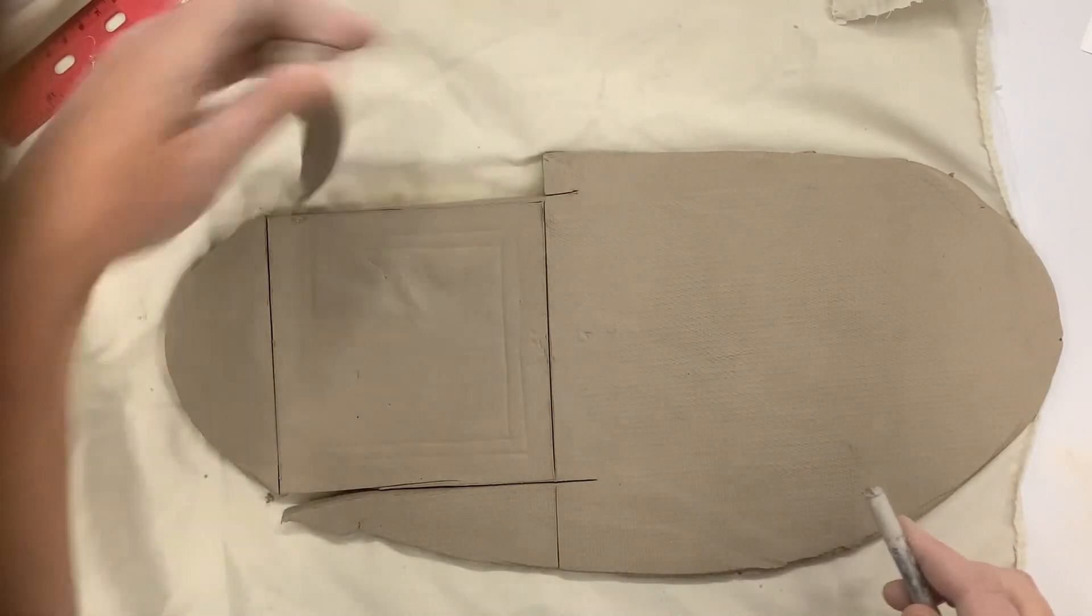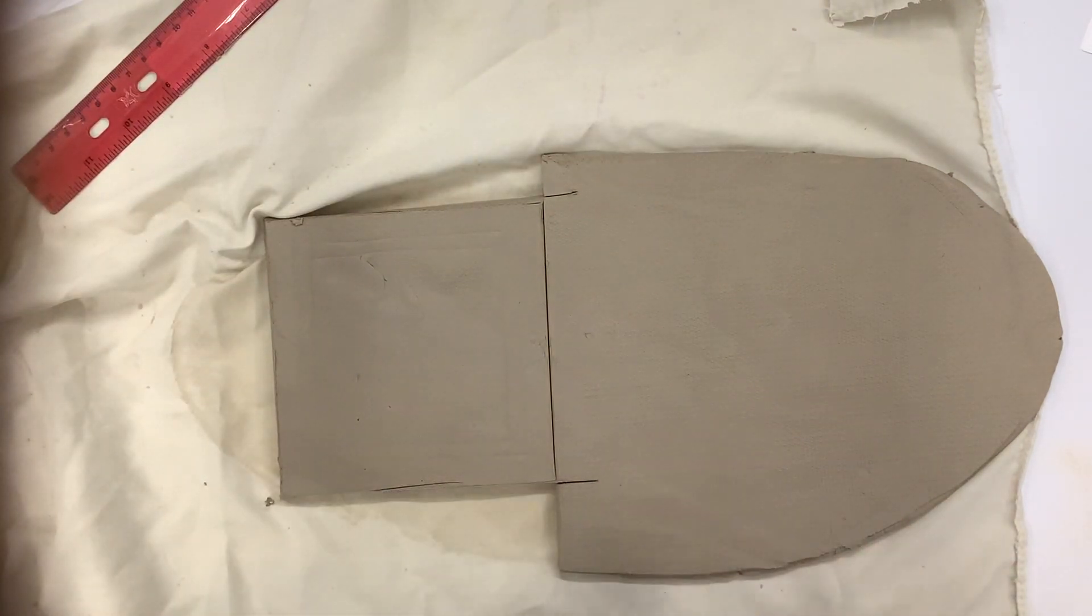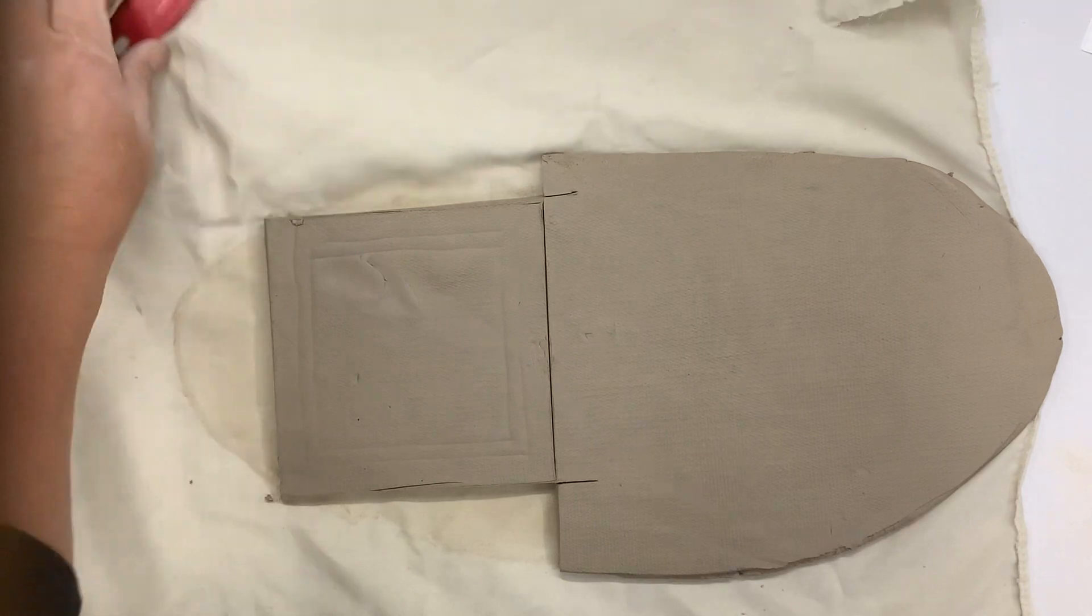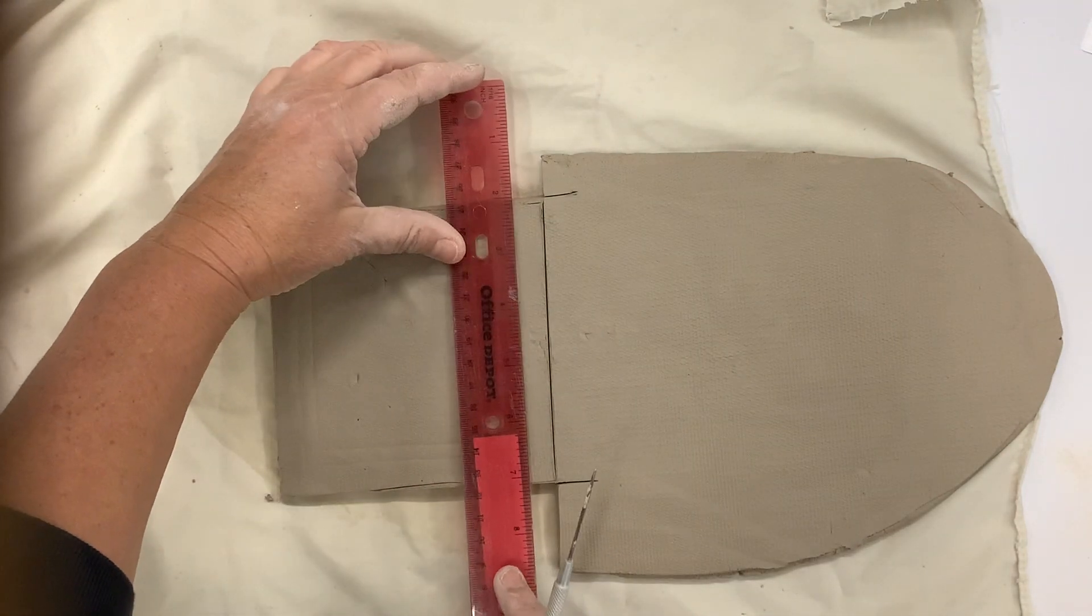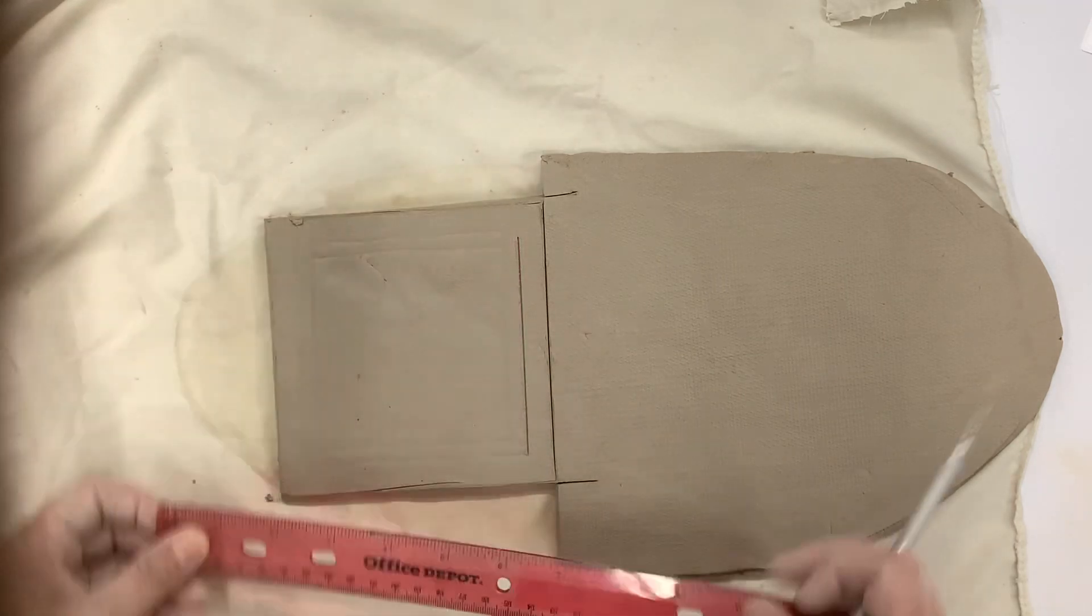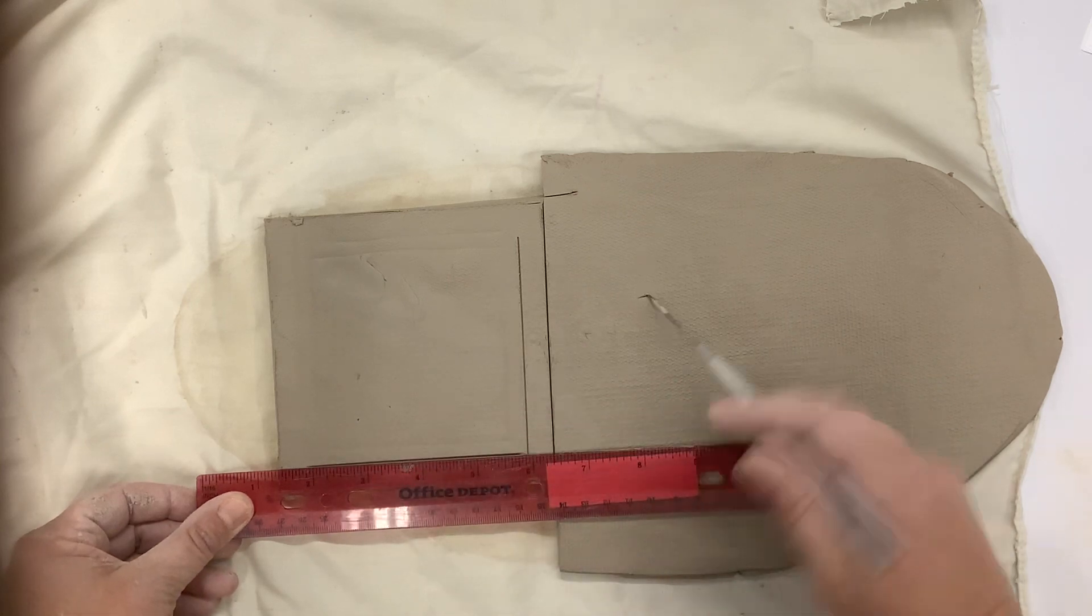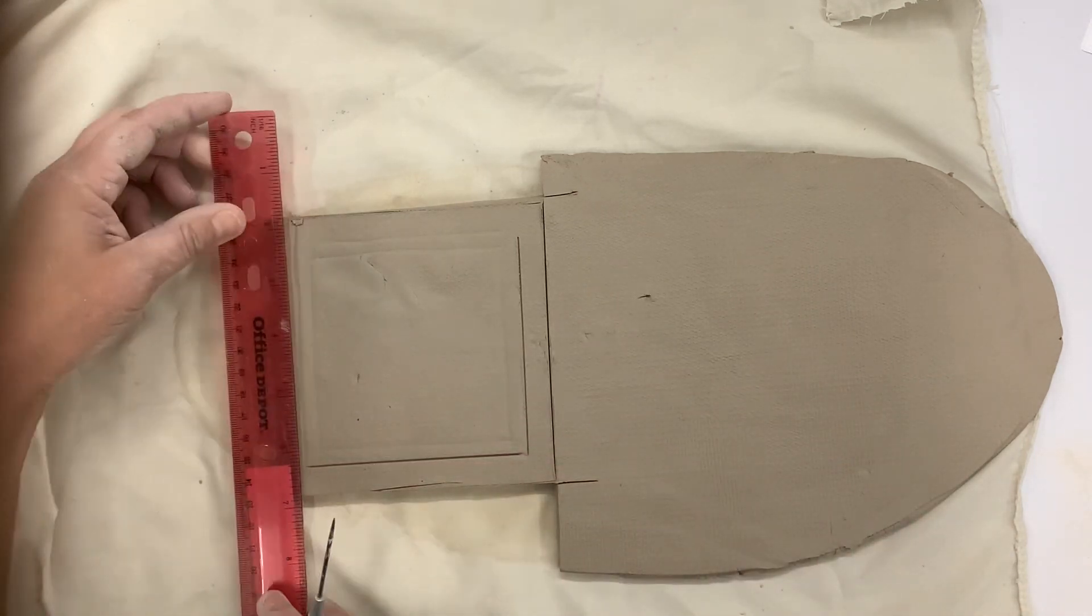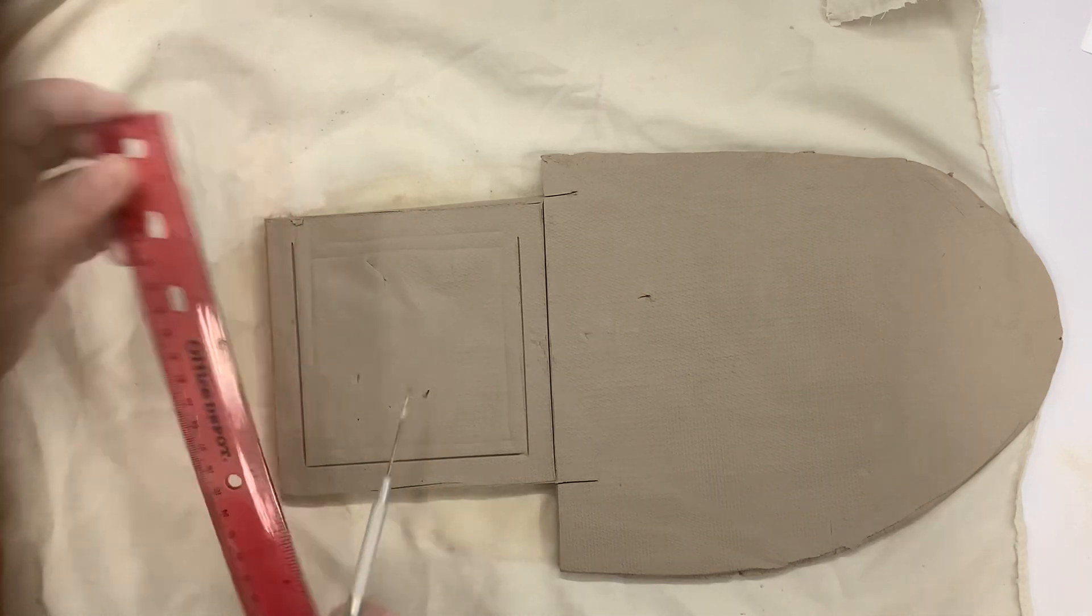Then you can go ahead and take this apart. What I want to do also is go back over lightly the lines I had for my border. I can see them from what I did earlier.